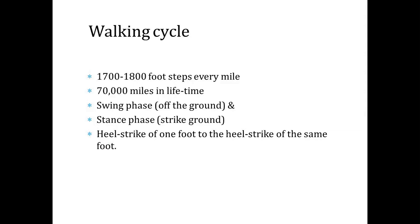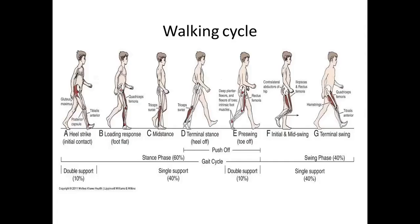Regarding the walking cycle: there are 1700 to 1800 footsteps every mile, and approximately 70,000 miles walked in a lifetime. The walking cycle has two phases — swing phase and stance phase. Swing phase is off the ground; stance phase is striking or on the ground. The walking cycle is defined from heel strike of one foot to the heel strike of the same foot.